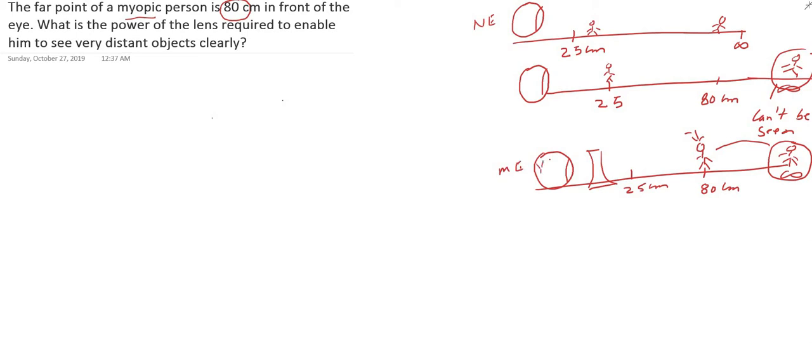The inverted image is then formed on the retina. So even if the object is at infinity, if you use a concave lens, its image will form at the far point, which is 80 centimeters. This image becomes the object for the eye, and the eye forms its image on the retina, which is inverted.